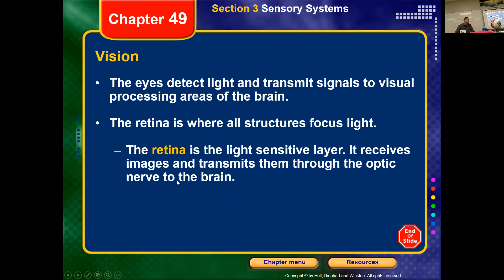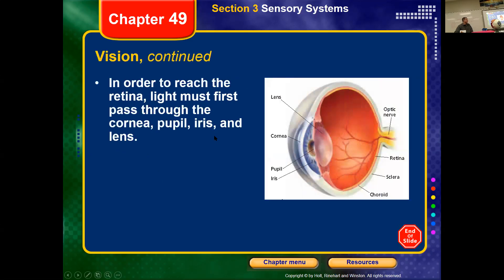Vision is controlled by photoreceptors in the retina, which is the very inside back layer of the eye. At the back of the eye is a pigmented area with photoreceptors that detect different things in light. In order for light to get there, it has to pass through two other layers. Initially it goes through the outside layer — most of it is the white part called the sclera. The clear part, still made of epithelial tissue but with no pigment, is the cornea. You can scratch the cornea, and if you've ever done that it doesn't feel very good.